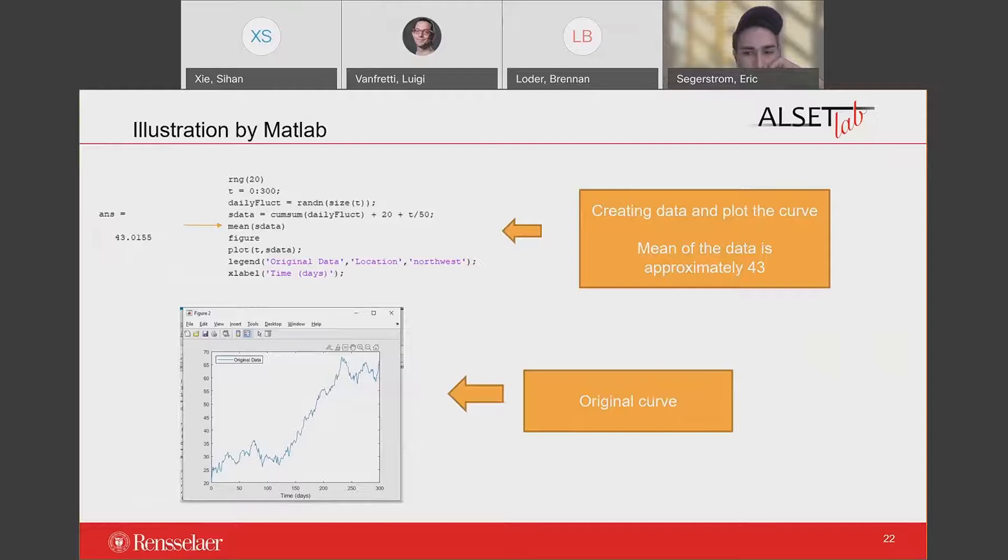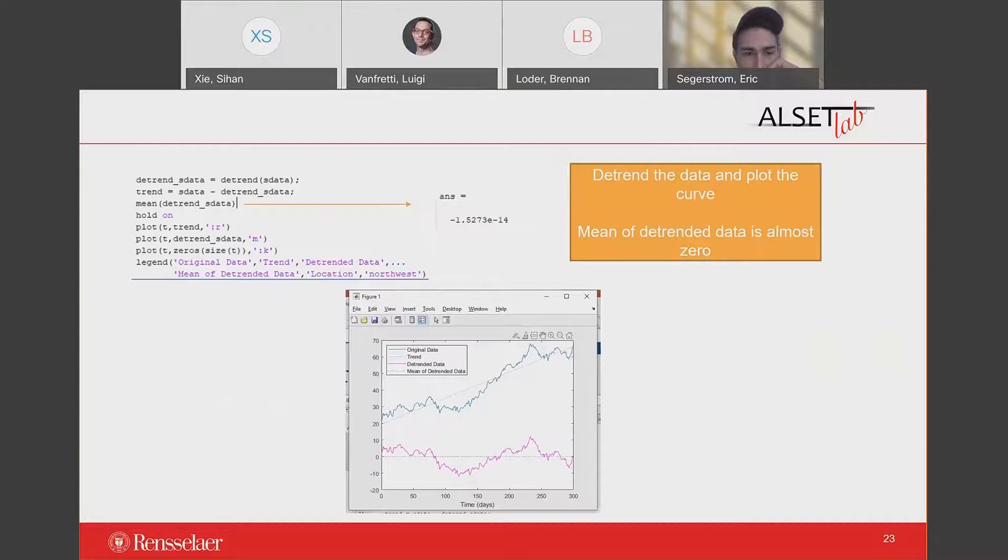First I create the data and explore the curve. The picture below displays the original curve. We can see from the calculation that the mean of the data is about 43. Then we substitute the data into the detrend function and get detrended data. The detrended data is shown by the magenta curve, which we can see the mean of the detrended data is approximately zero. By making the mean of the detrended data to be zero, fluctuations of data will be more obvious.